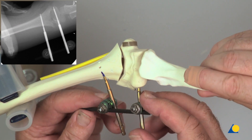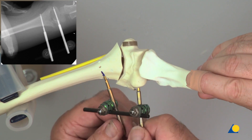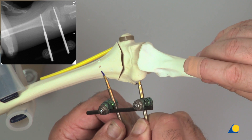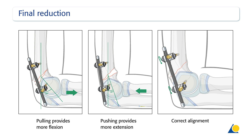With the proximal fragment in a true AP view, the distal fragment is manipulated until a satisfactory orientation is obtained. With the upper arm held firmly and the elbow at 90 degrees, pulling along the axis of the forearm causes flexion and pushing causes extension of the distal fragment. Using these manoeuvres, a correct alignment can be achieved.